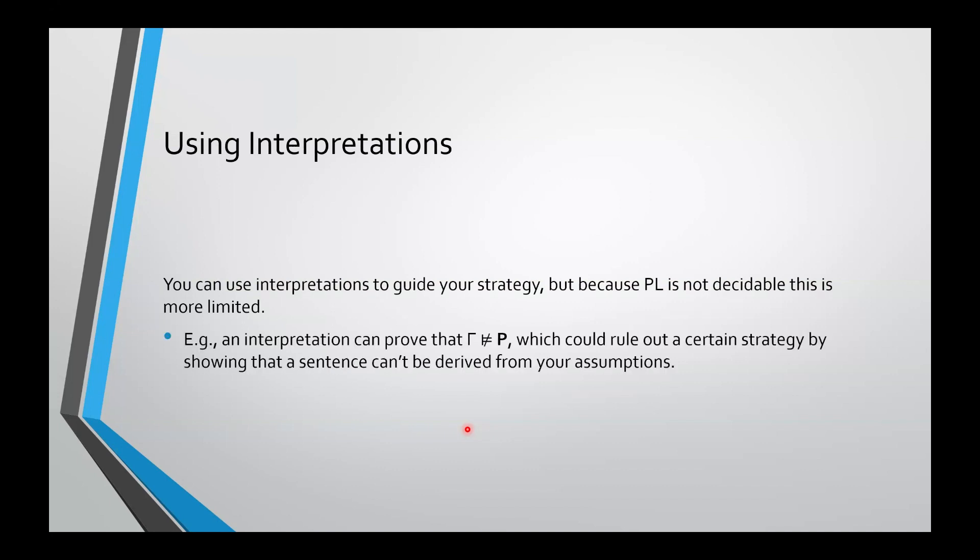So for example, you can construct an interpretation to prove that a set does not entail a sentence. And you can use this to rule out a certain approach to a derivation because you would use this to show that you can't derive a particular sentence from your assumptions because those assumptions don't actually entail that sentence. So that is something that can be useful sometimes.